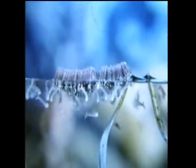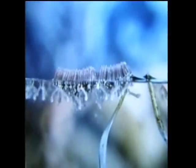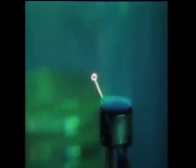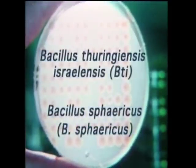Yet her offspring, the mosquito larvae, feed on organic material, including bacteria that are found in these aquatic habitats. This makes it possible for two naturally occurring bacteria, Bacillus thuringiensis israeliensis and Bacillus sphericus, to provide environmentally compatible mosquito control.